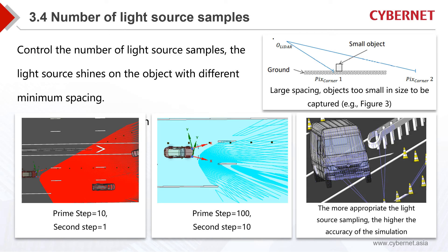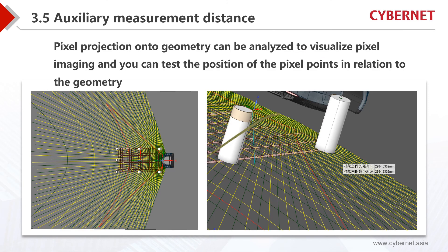The requirements for the number of light source samples and minimum spacing need to be defined according to the size of the geometry simulated in a scene. Different meshing will affect the simulation result. For example, if the spacing of a light source is large, it might not be able to detect small objects, and the system will assume it is just a flat surface. During simulation, we can also visualize the results — setting parameters to focus or highlight a certain area. The data can then be exported, and the dimension and position relationship between pixels and geometry can be tested.